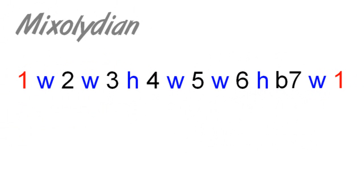Let's first take a look at how we can derive chords from a parent scale. This is the first step in understanding how chords and scales are intrinsically connected. Here are the intervals of the Mixolydian scale. The most elementary chord intervals contained within that scale are those of the major triad — root, major third, and fifth. Therefore, we know this scale is compatible with major chords.